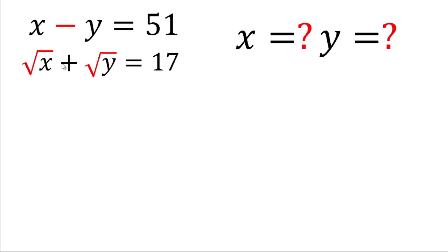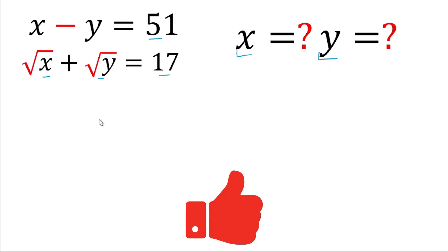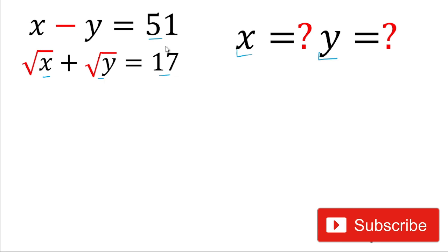Hey friends, welcome back! Today in this video we will solve this easy algebraic problem. The given problem is: x minus y is equal to 51, and under root x plus under root y is equal to 17. We will have to find the value of x and value of y. Give thumbs up to the video and do not forget to subscribe the channel. Let's start the video.